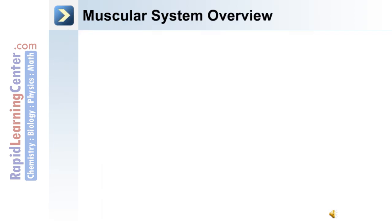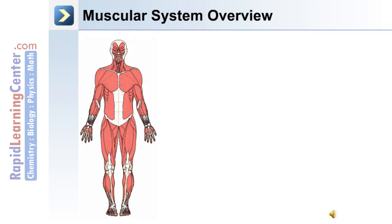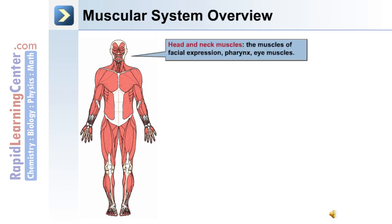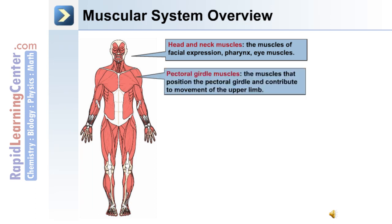A muscular system overview. In this tutorial, we'll look at the different muscle groups in the different regions of the body, including the head and neck muscles, muscles of facial expression, muscles that move the pharynx, and muscles that position the eye.